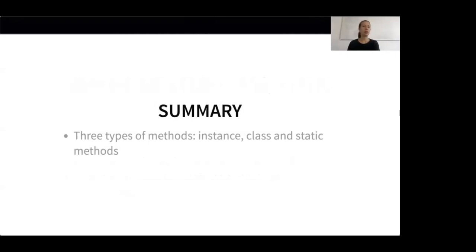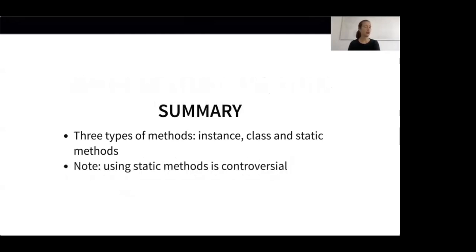This concludes our section on the different types of methods that can be used in a class. To sum up, we have learned that classes can have three types of methods. The most common type are instance methods, but there are also class and static methods. You should note that using static methods is controversial — some people advise against them, but personally I think that they can be useful in certain situations.